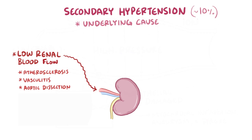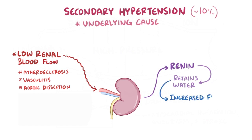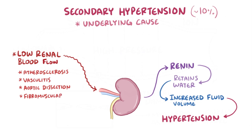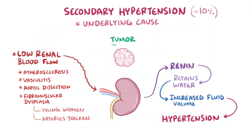This is because the kidneys play a super important role in blood pressure regulation. When not enough blood flows to the kidney, the kidney secretes the hormone renin, which ultimately helps the kidneys retain more water. That water contributes to more blood in the arteries, making them more full, which leads to higher pressures. Other diseases can also cause secondary hypertension. Fibromuscular dysplasia, which affects young women, can cause the walls of the large and medium-sized arteries to thicken. If it involves the renal artery and limits blood flow to the kidneys, it triggers more renin. Another example is a tumor that produces excess aldosterone, and just like renin, this leads to fluid retention.